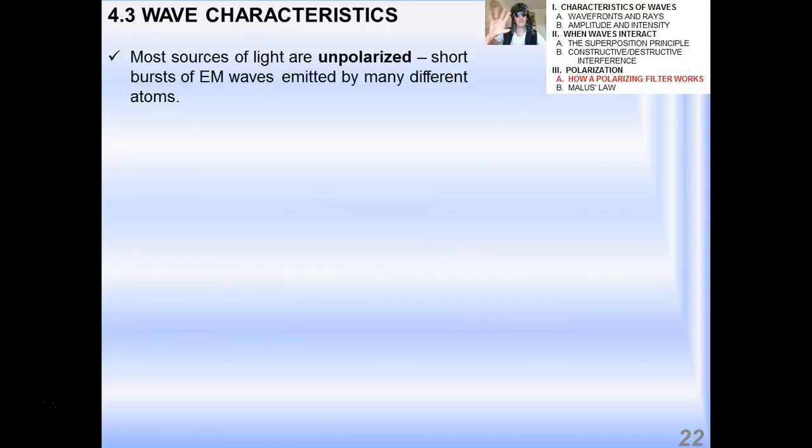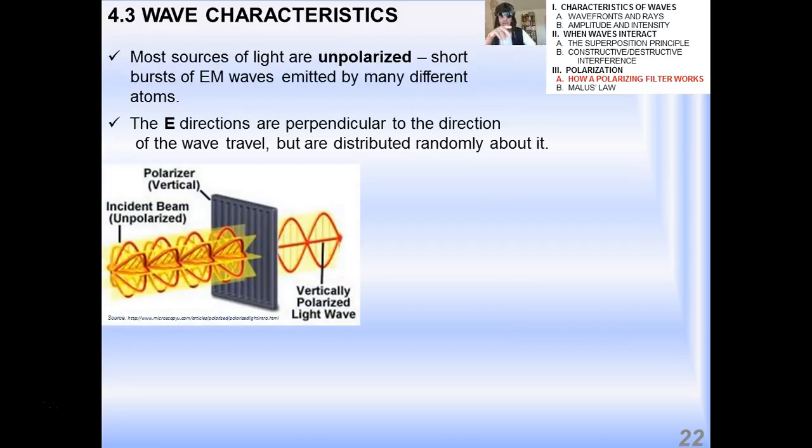Most sources of light are unpolarized. They're short bursts of electromagnetic waves emitted by many different atoms. This means that the electric field directions are perpendicular to the direction of wave travel, but they're distributed all around it randomly. It's actually more than you can possibly show in a diagram, but this is unpolarized light. It's going, it's like fanning out in all directions, like an almost infinite number of planes in all directions. When that passes through a polarizer, what comes out the other side is a very nice, just one plane of that electric field transverse wave. We say that it's polarized light.